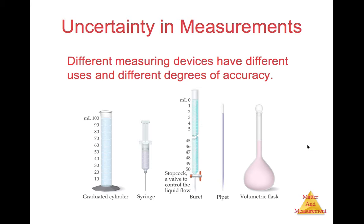Different measuring devices have different uses and different degrees of accuracy. And therefore we need to communicate to others when we measure using different devices how certain or how accurate our device was. Notice a graduated cylinder versus a burette might be able to measure things differently to a different degree of accuracy.